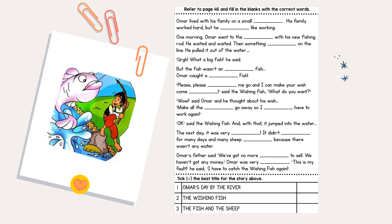Once you have finished reading, look at this exercise. You have to fill in the blanks with the correct words. You can refer to the story again and start filling the blanks. After finishing the first part, look at the bottom — you have to tick the best title for the story above. What is the best title for the story? You have to choose one only.